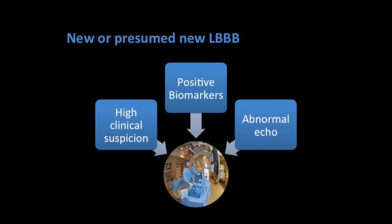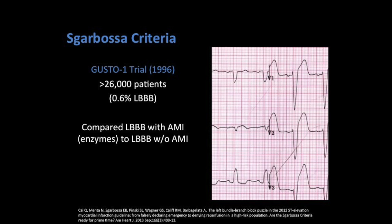What it all comes down to really is our clinical suspicion. In the hospital we have things like biomarkers and echo to confirm diagnosis, but in the field, if you feel like it's an acute myocardial infarction, go ahead and treat it like that. Luckily, we do have some criteria to help us analyze the ECG in light of a left bundle branch block to evaluate for myocardial infarction. This is known as the Sgarbossa criteria.